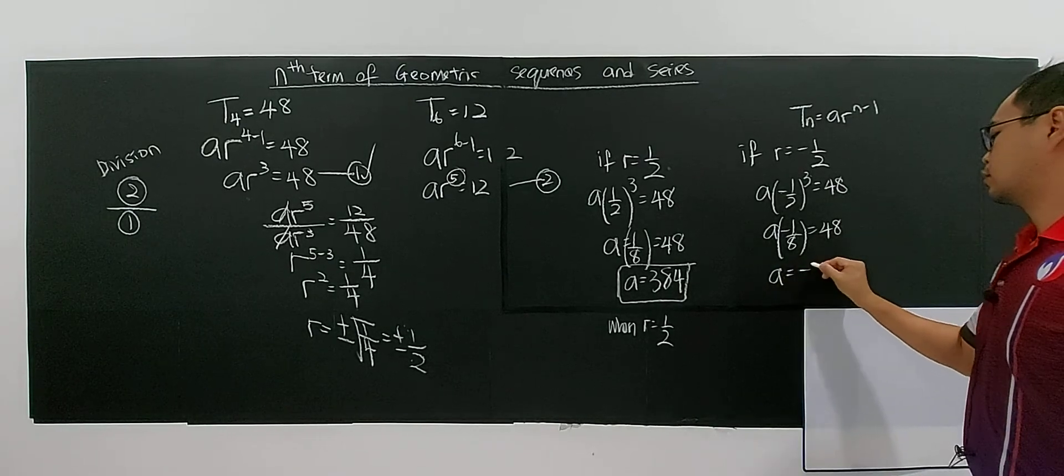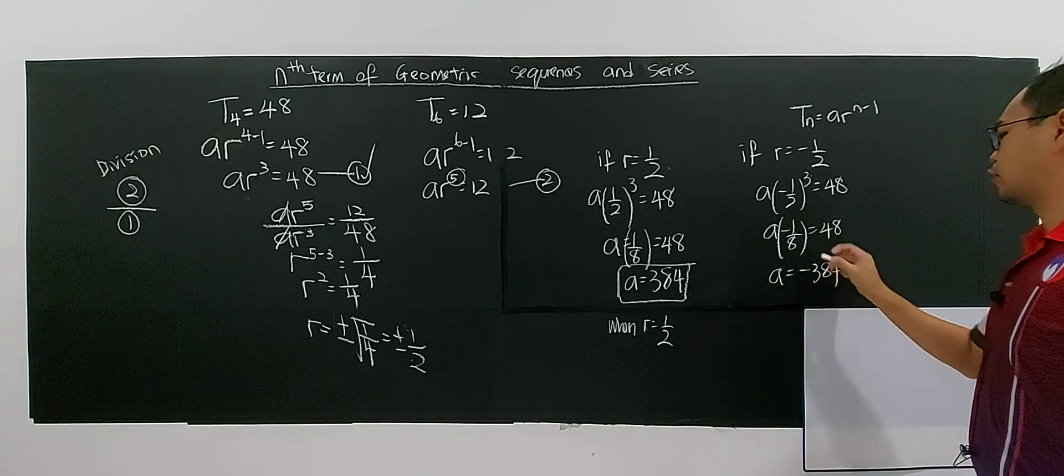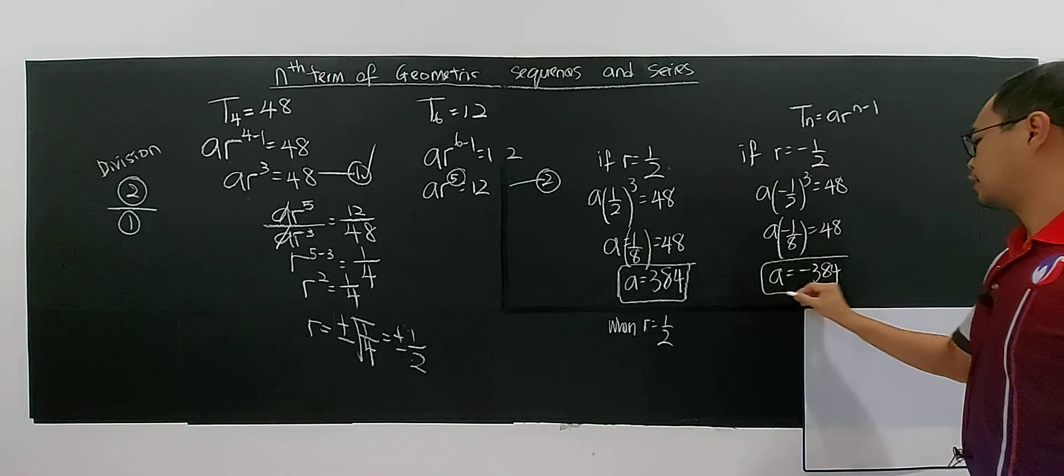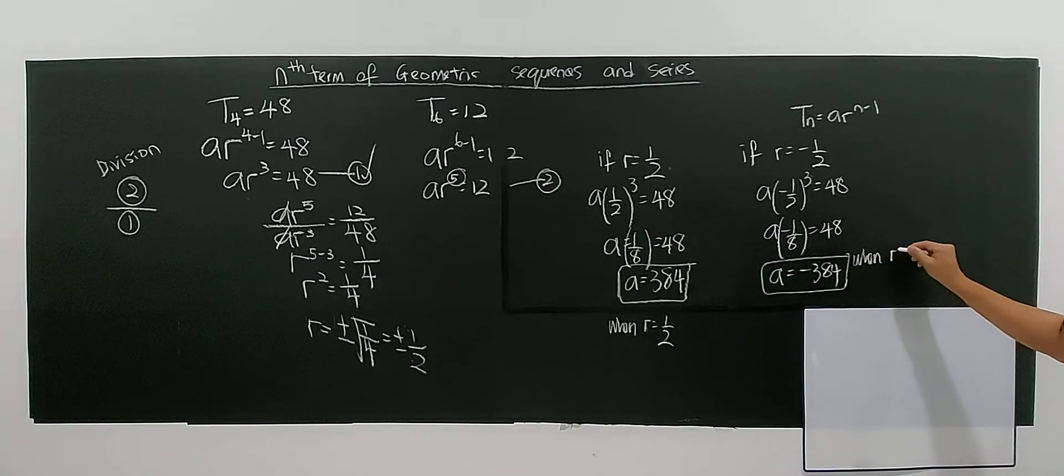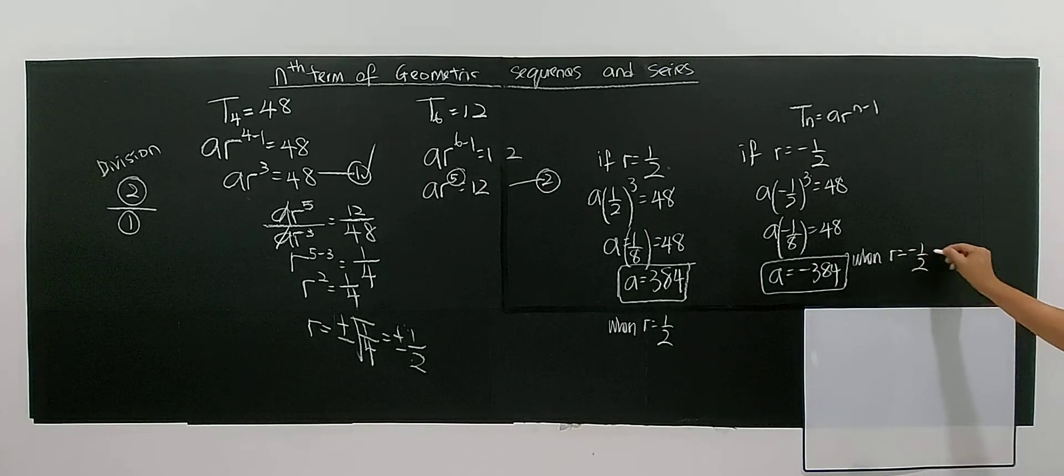So a = -384. This happens when r = -1/2.